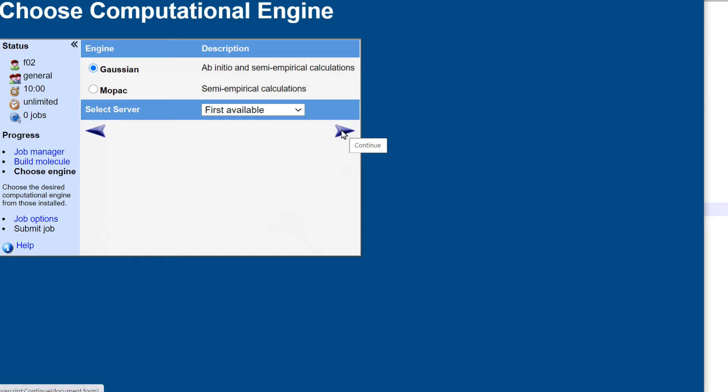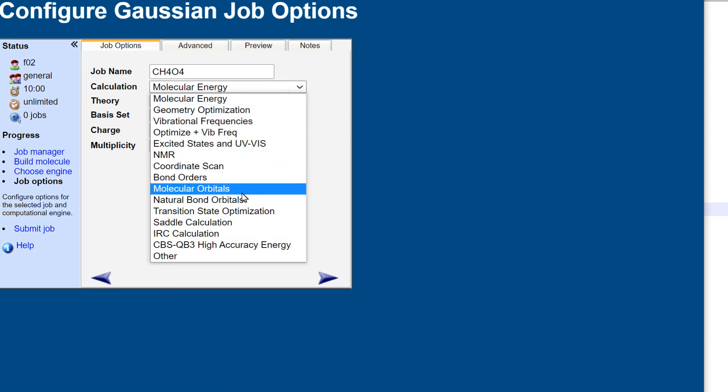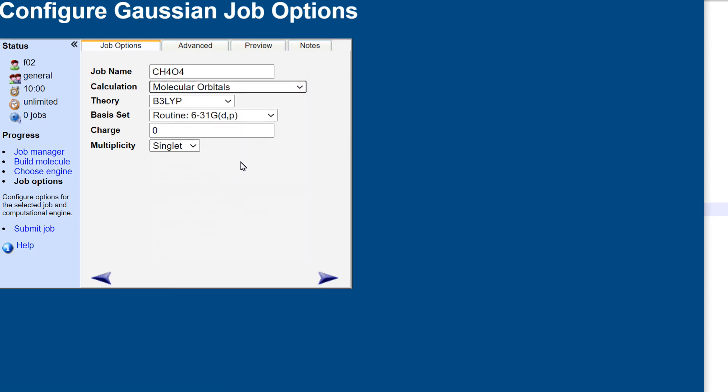Accept the default methods. This has been optimized at the B3LYP 631 GDP level. And so we'll do the molecular orbitals job with the same theory.